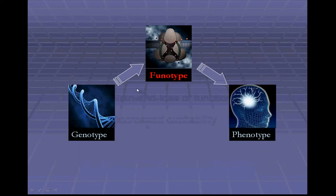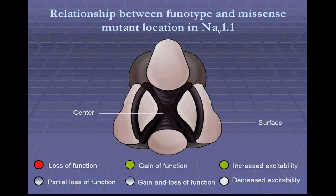Regarding the genotype-phenotype relationship, it is found that missense mutations located in the pore region result in loss of function mostly, and partial loss of function occasionally. Whereas missense mutations located in the surface of the channel may lead to increased flexibility, gain of function, and also loss of function of different degrees.